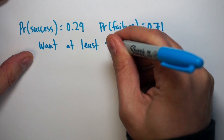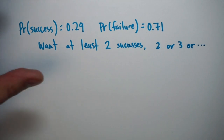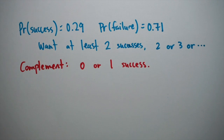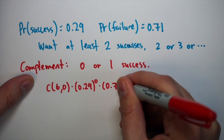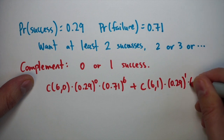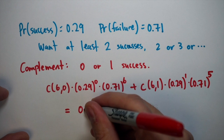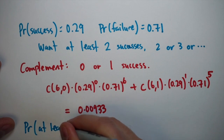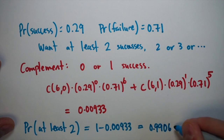We're looking for at least two successes, meaning two, three, four, five, or six. It's much easier to use the complement: zero successes or one success. For zero successes: C(6,0) times (0.29) to the zero times (0.71) to the sixth. For one success: C(6,1) times (0.29) to the first times (0.71) to the fifth. Adding these gives approximately 0.00933. The probability of at least two successes is therefore one minus 0.00933, which equals approximately 0.99067.